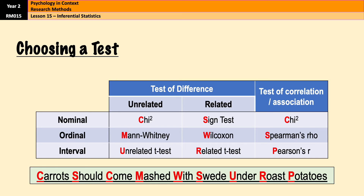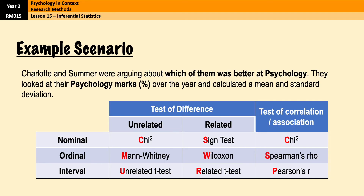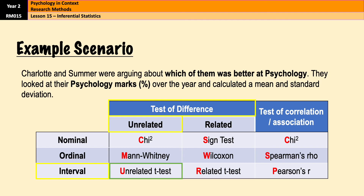Let's look at a couple of examples. Charlotte and Summer were arguing about who is better at psychology. They looked at their psychology marks in percent over the year and calculated a mean and standard deviation. That is clearly a test of difference. It is unrelated because Charlotte and Summer are in two different groups. It is interval data because they are looking at percentages and have calculated a mean and standard deviation. That means they would use an unrelated t-test.